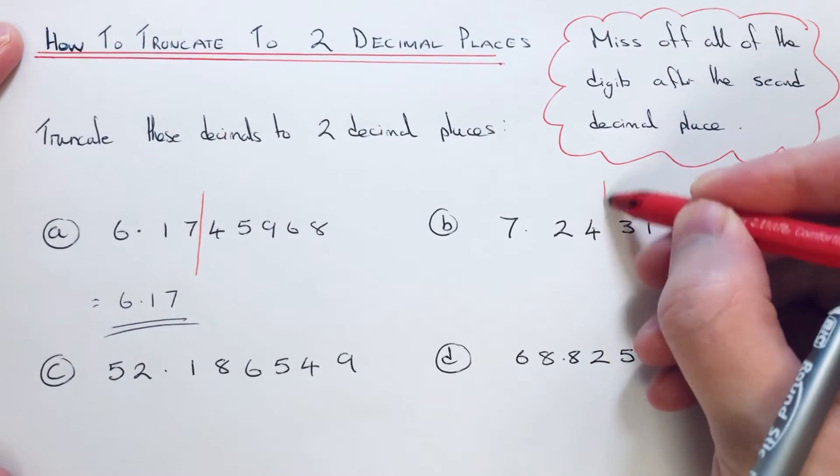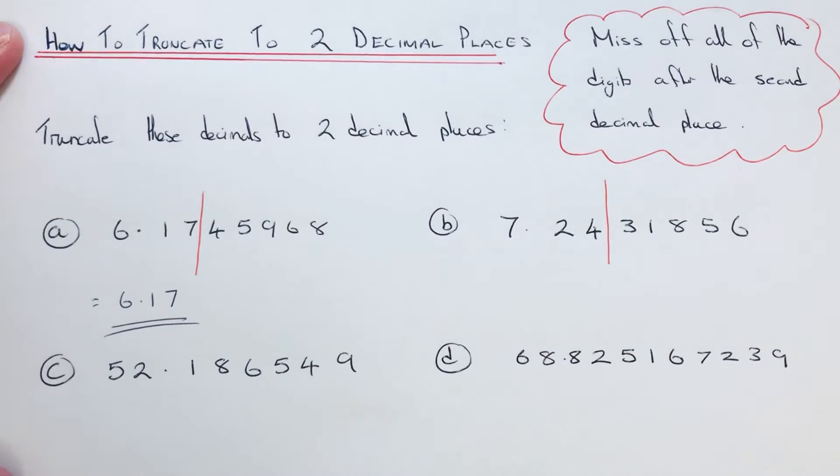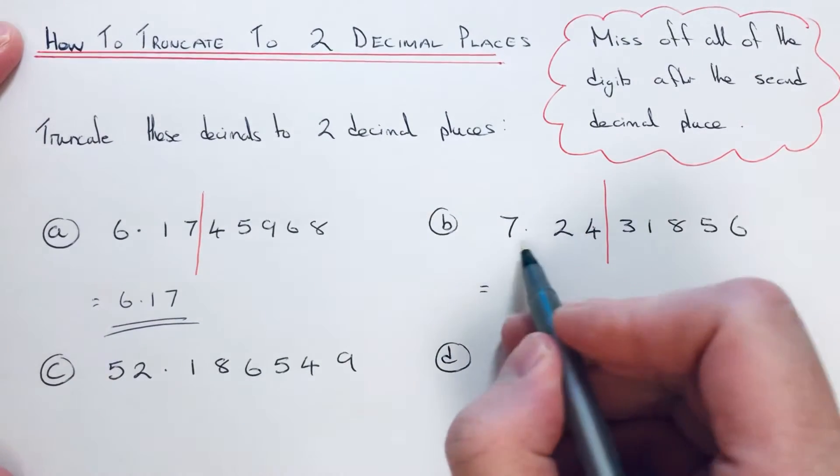Cutting the number off here, we just write down the digits before the red line, so that's 7.24.